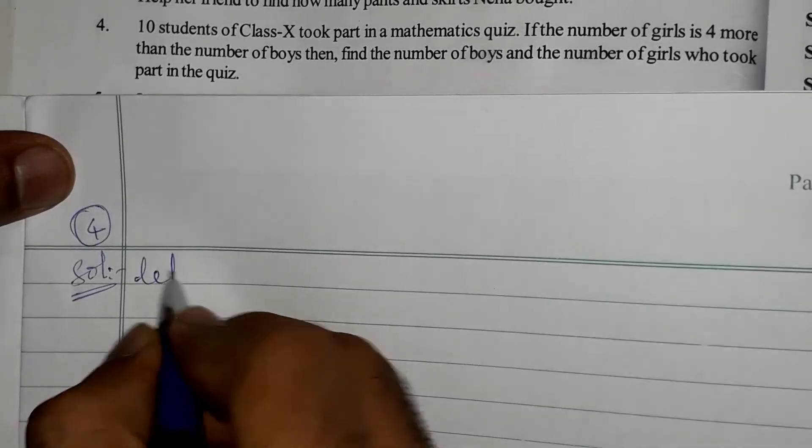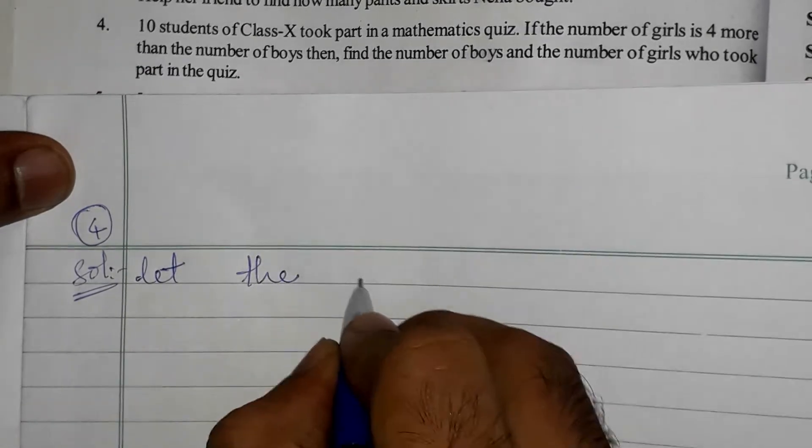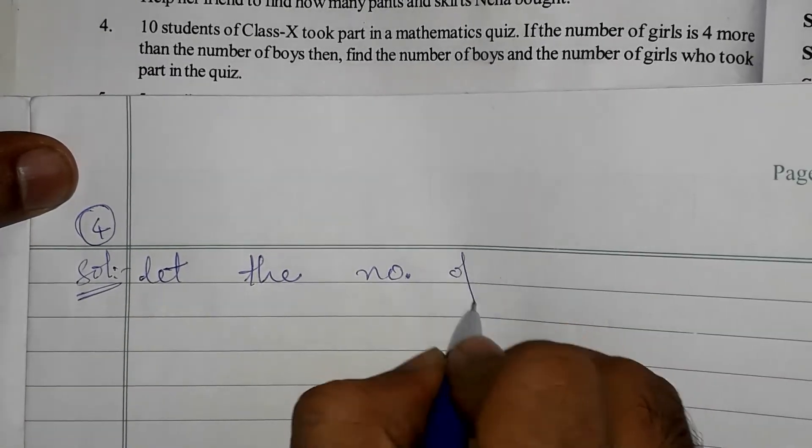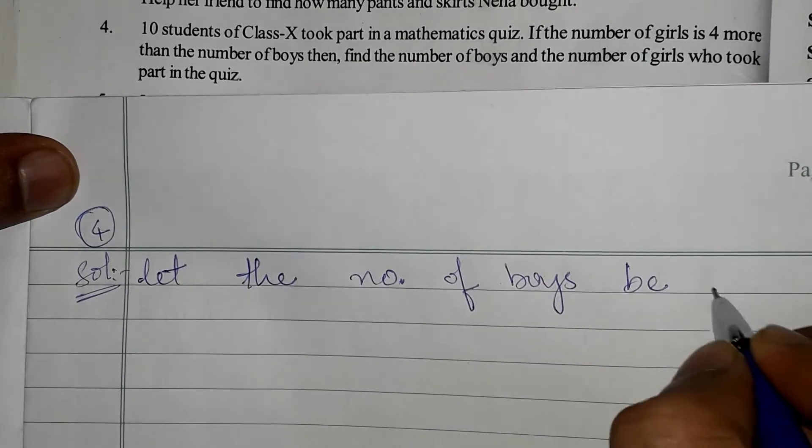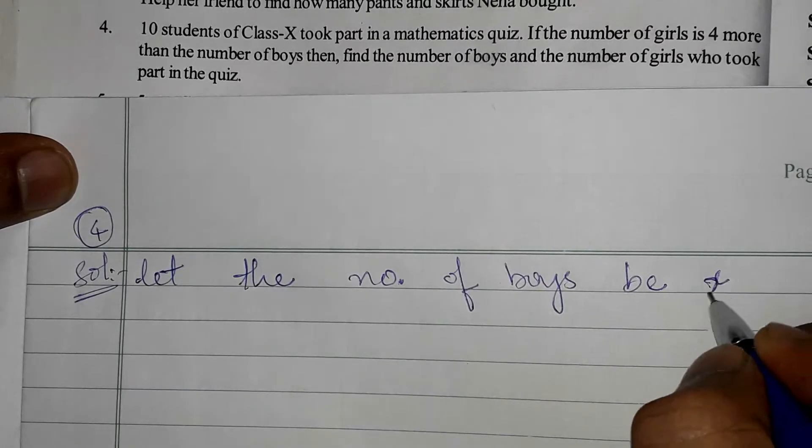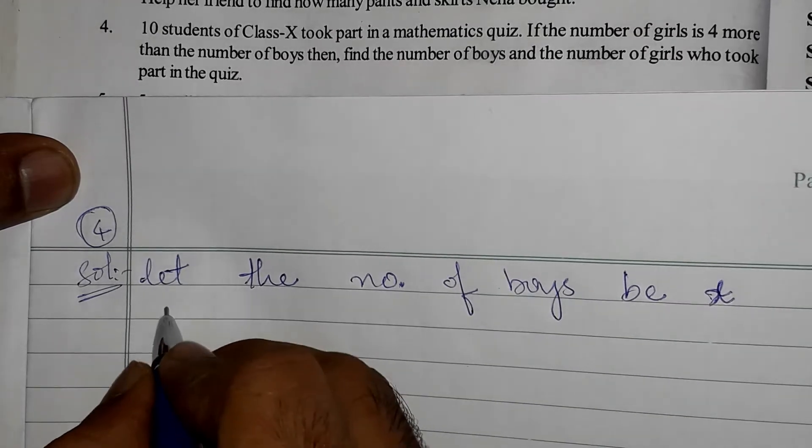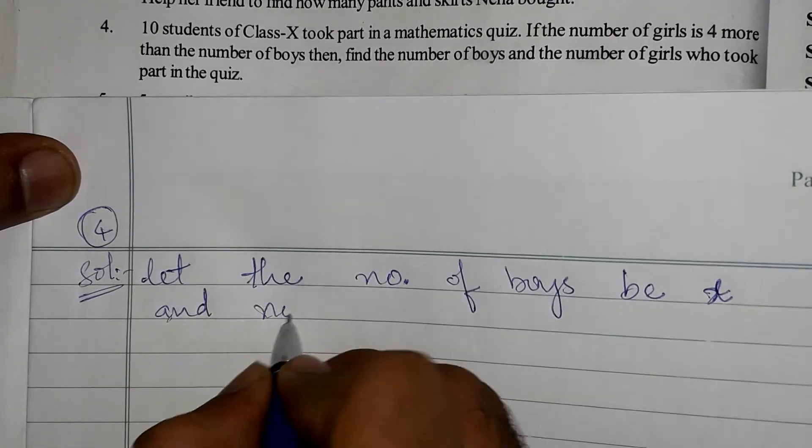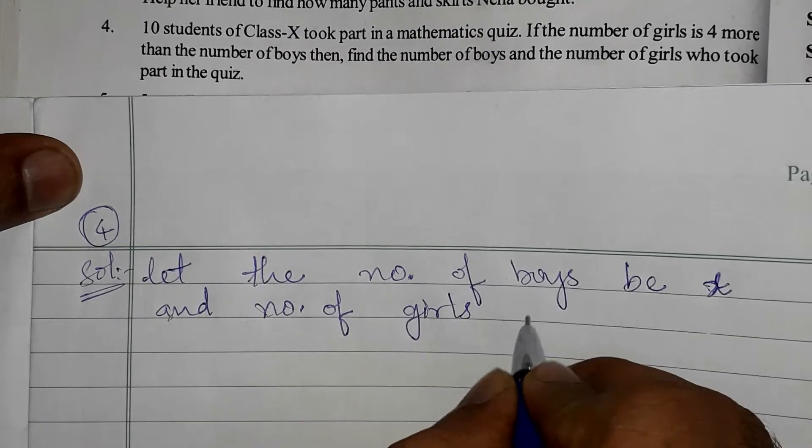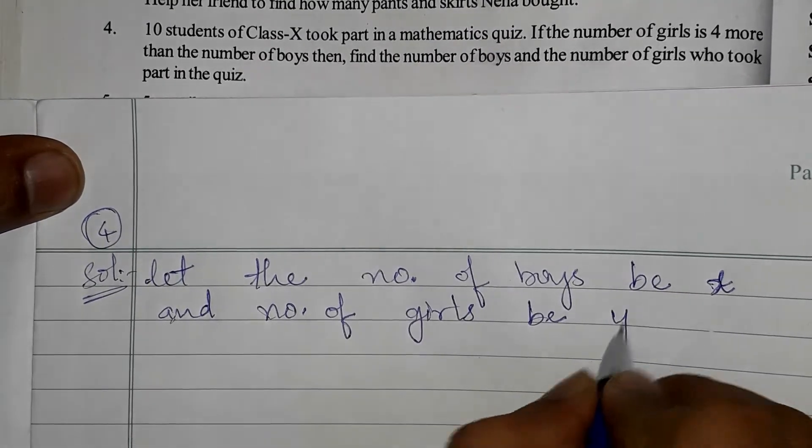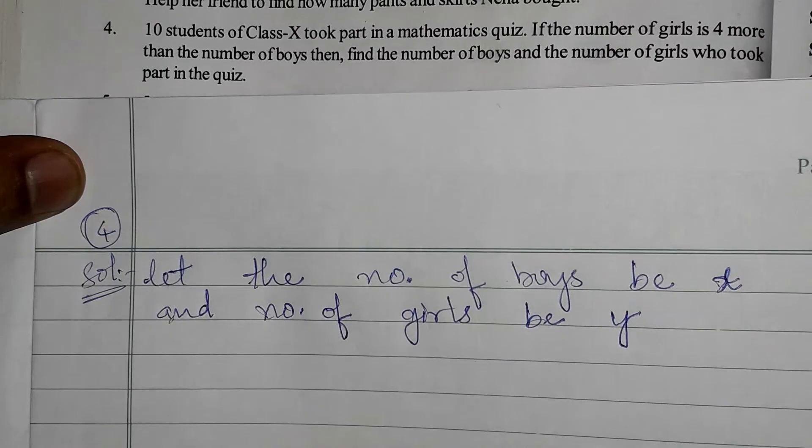So let the number of boys be x and number of girls be y. So what they have given - they told that 10 students, 10 students means including girls and boys both.